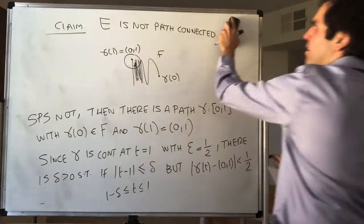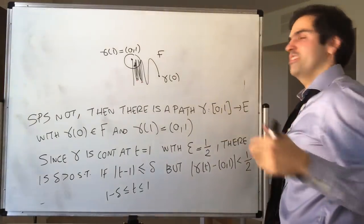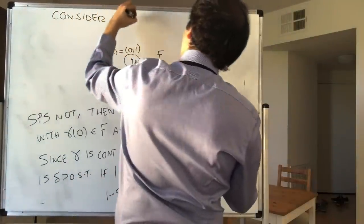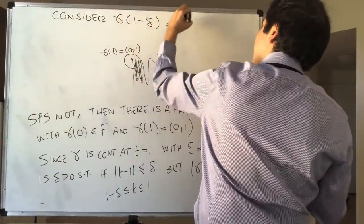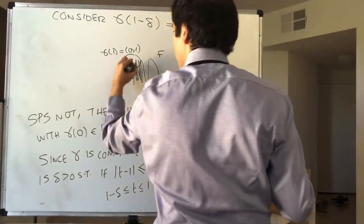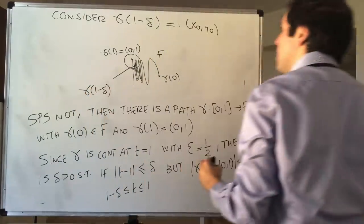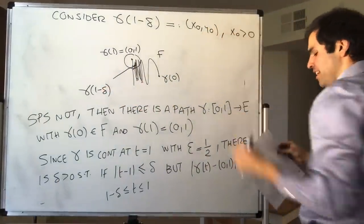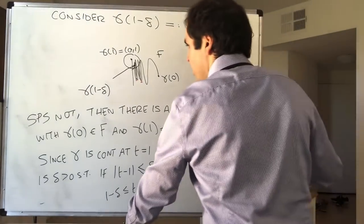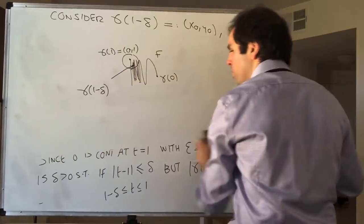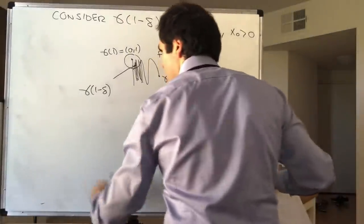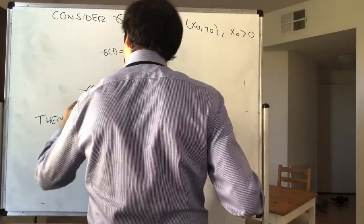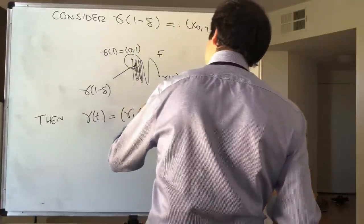Now for the formalism. Consider γ(1 − δ) = (x₀, y₀), and assume this point is on f so x₀ > 0. Write the components of γ(t) as (γ₁(t), γ₂(t)). By definition γ is continuous, so the first component γ₁ is continuous.